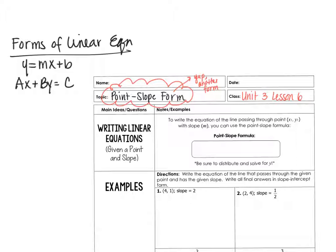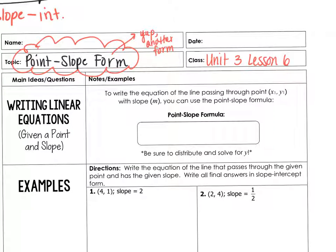The third and last one is point-slope form. Slope-intercept form is called that because it shows you the slope and the y-intercept. Well, point-slope form is going to show you a point and a slope — so the name actually tells you what you have. To write the equation of a line passing through a point with a slope, you can use point-slope form, which is y minus y1 is equal to m times x minus x1. Your point is located in the y1 and x1 positions, and your slope is m.